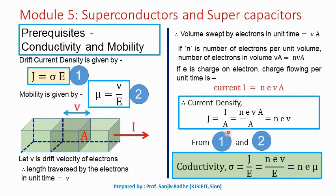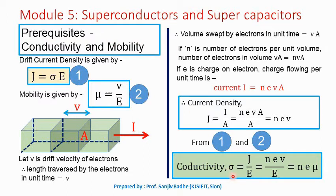From the relation J equals conductivity times E, we can write conductivity equals J upon E equals N e V upon E. Since mobility mu equals V upon E, we get conductivity sigma equals N e mu. So conductivity equals the product of electron concentration N, charge on electron e, and mobility of electrons mu — the required relation between conductivity and mobility.